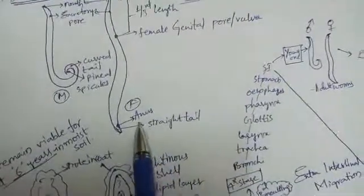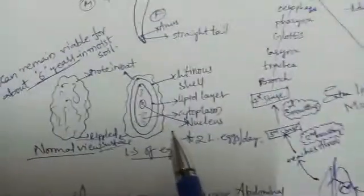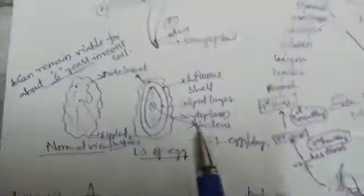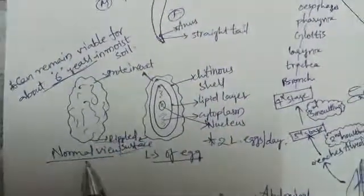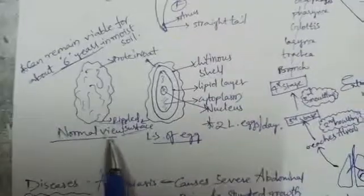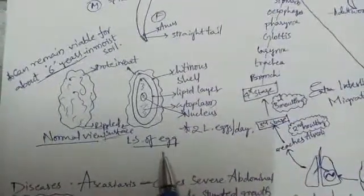They sexually reproduce in the human body and can lay two lakhs eggs per day. This is the normal view of a single egg, and this is the lateral section of the egg.